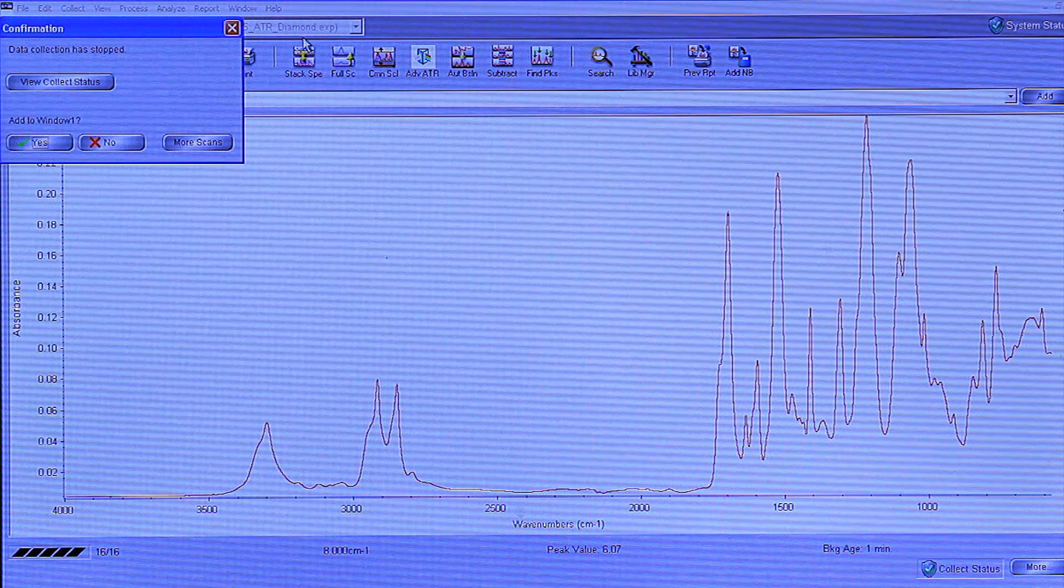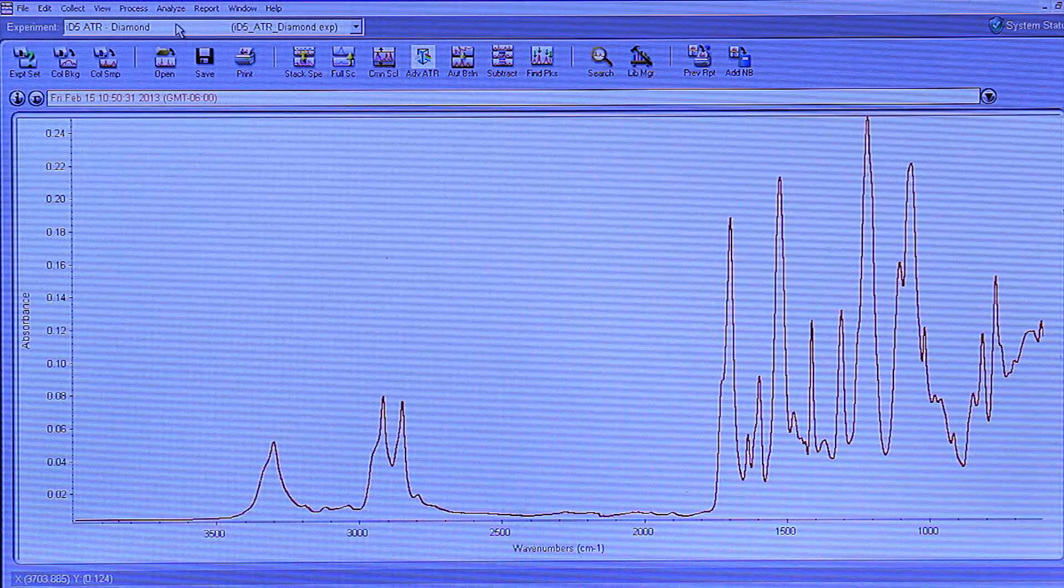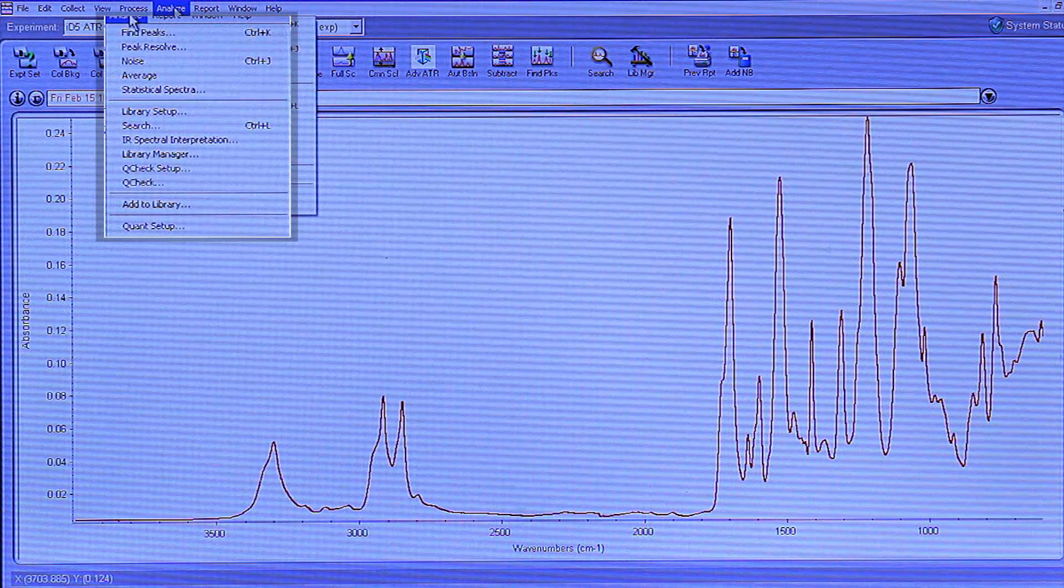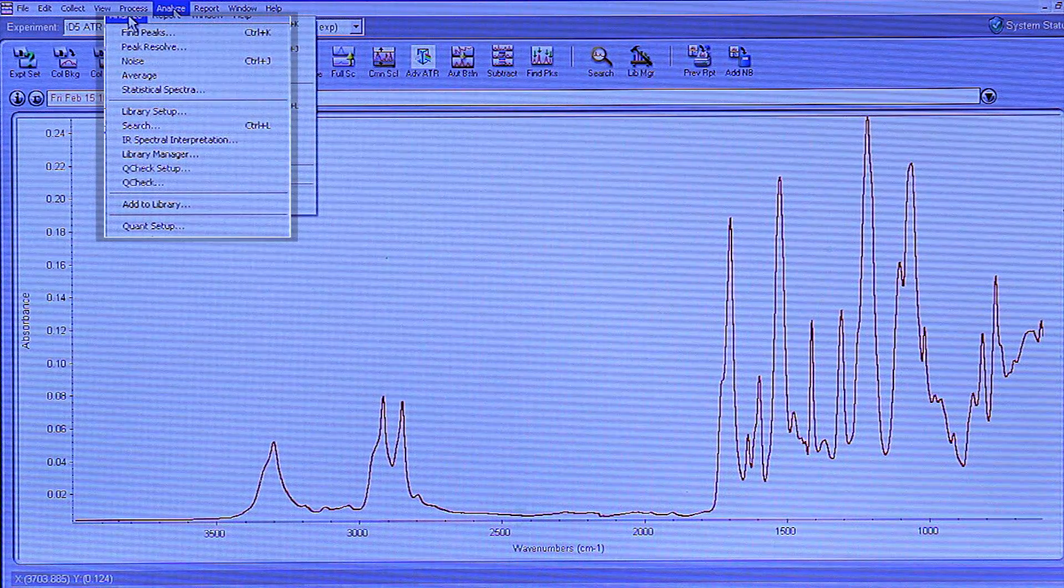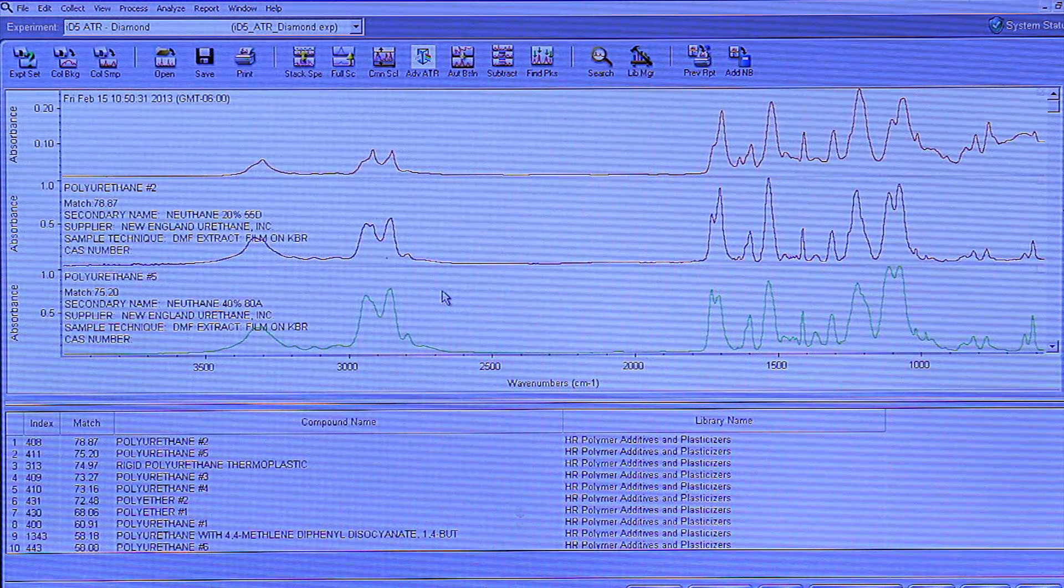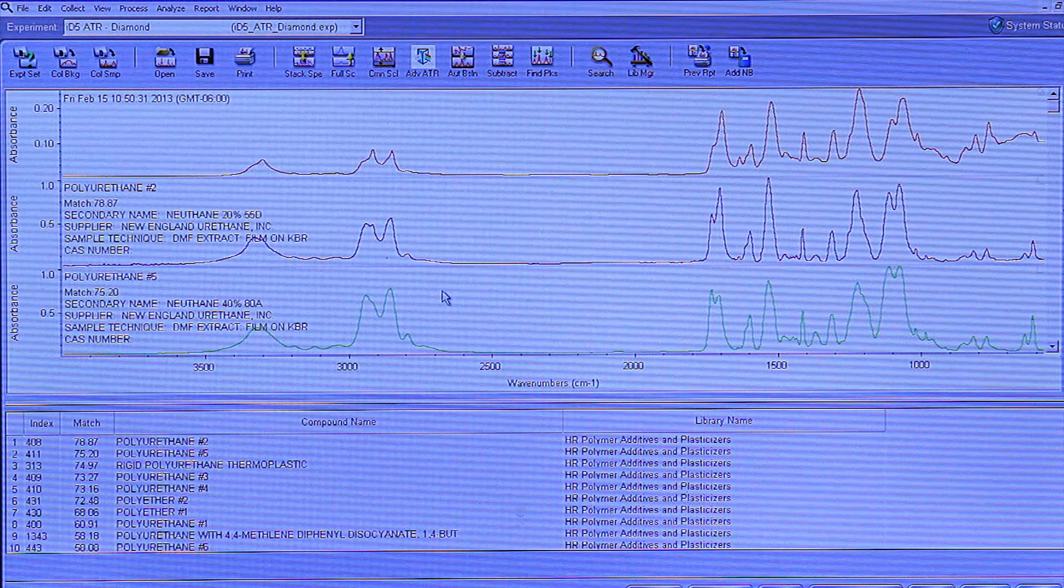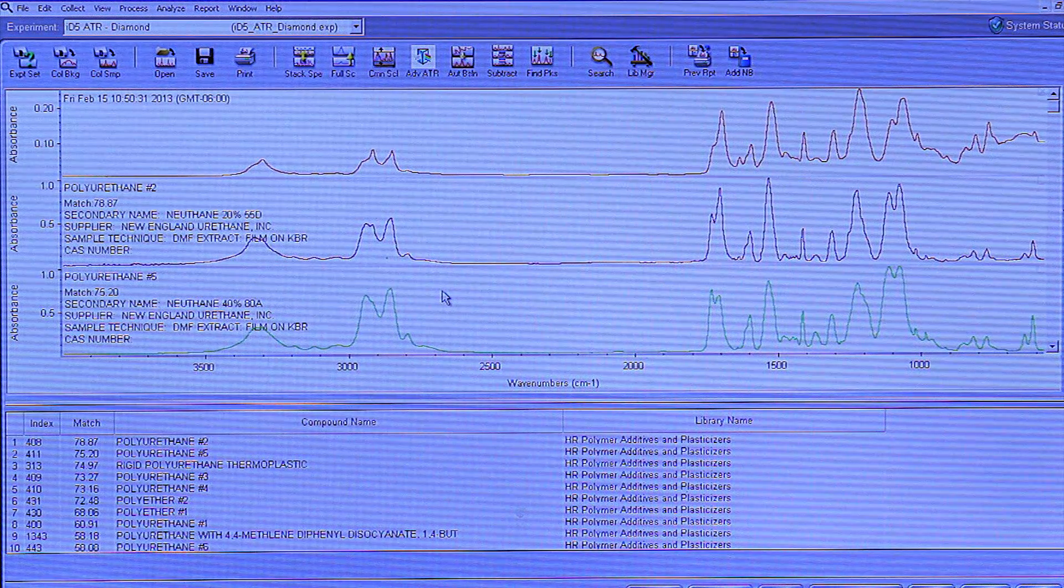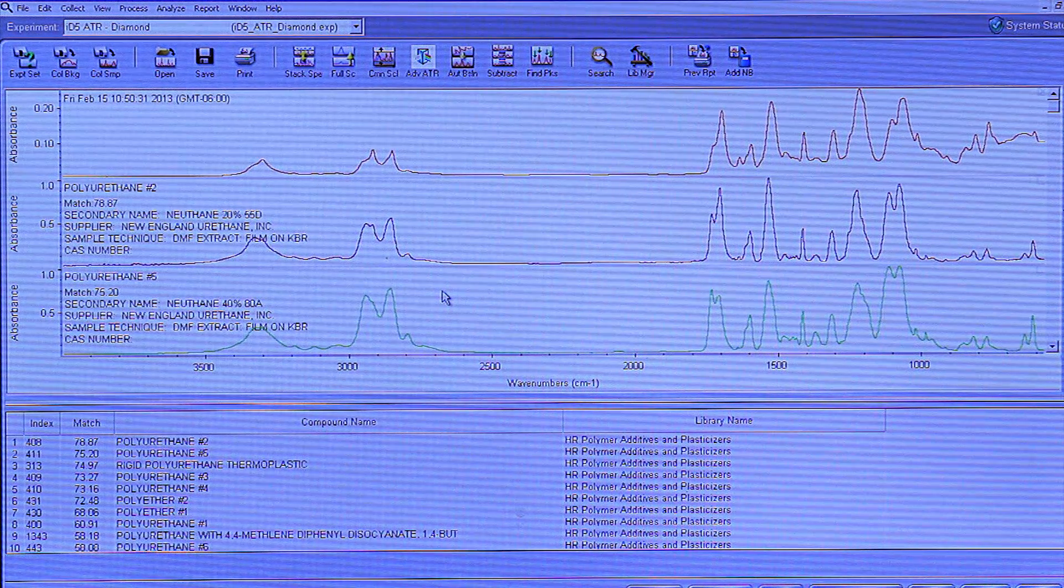Once the spectra is collected, we can add it to the window and then do an analysis where we search the libraries for it. And we can see our sample matches one of the library standards as polyurethane, and this is what our sample happens to be.